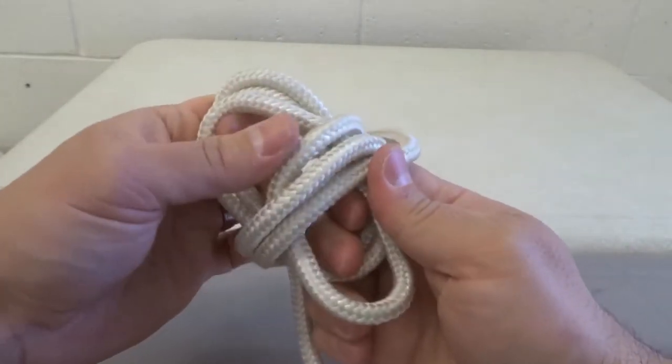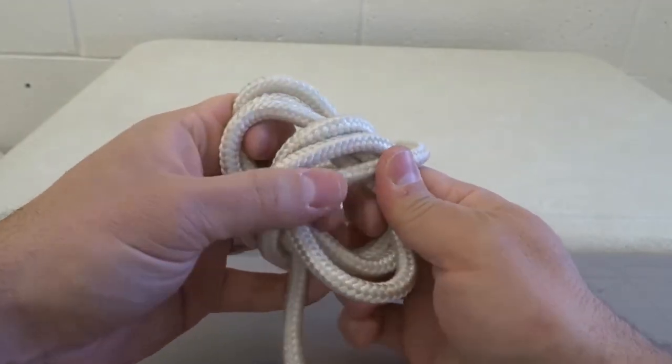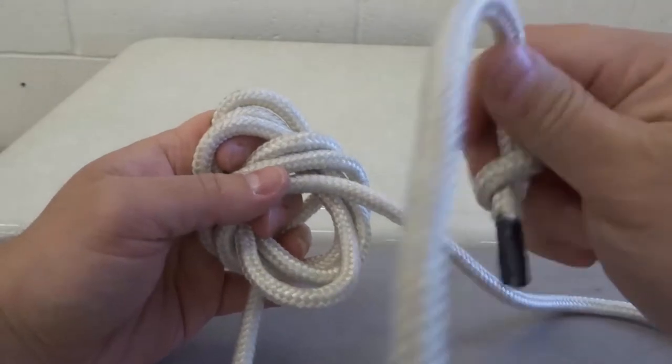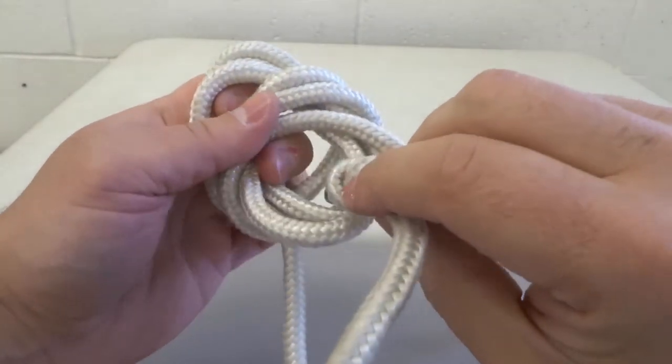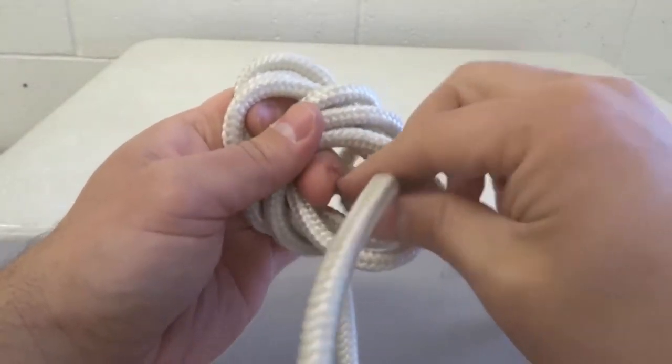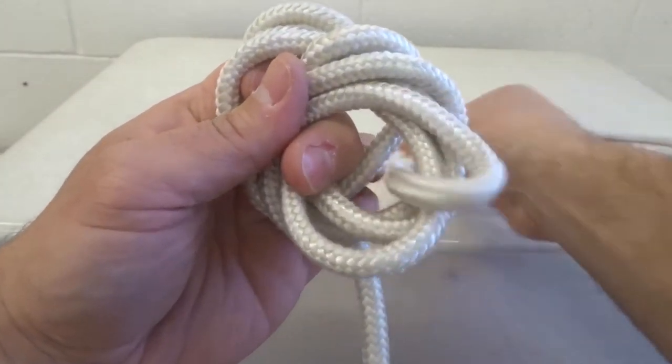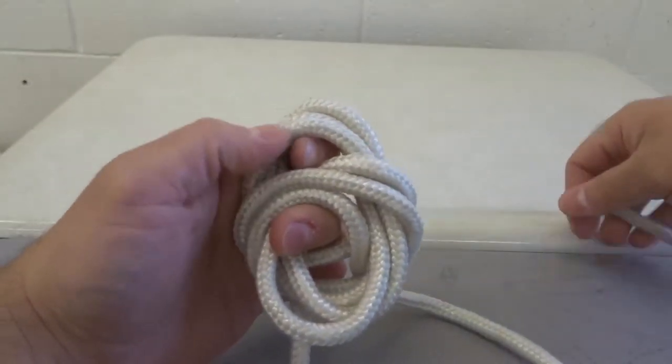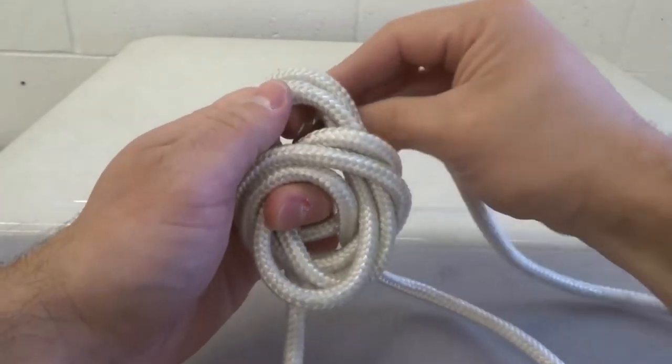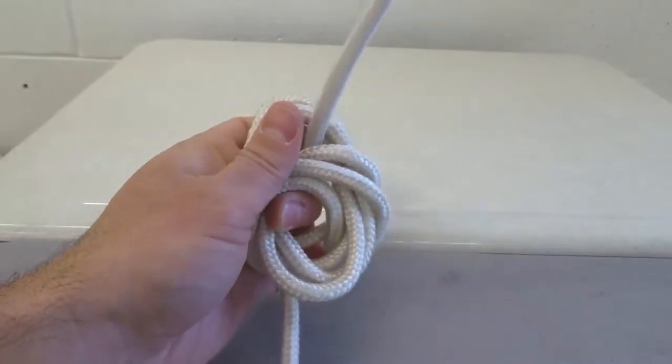So now what we have are these two wraps. One goes sideways and one goes up and down and with this end right here you want to send it through the bottom over here as you can see. Through the bottom over here like that and then you want to bring it out the top where this index finger is. Just like this and these are gonna be the next three wraps.